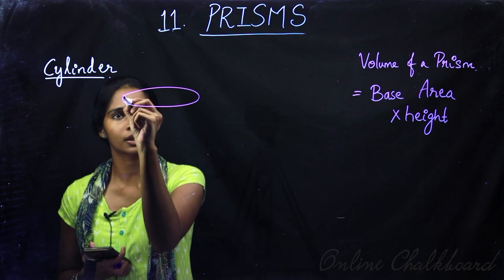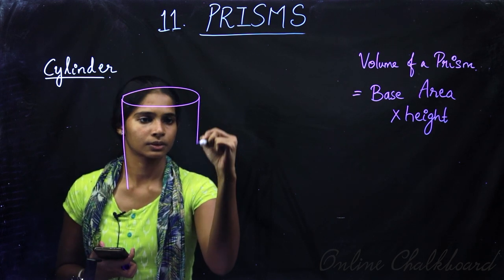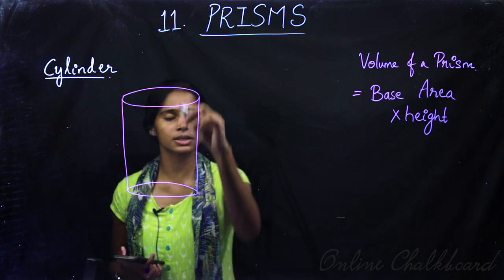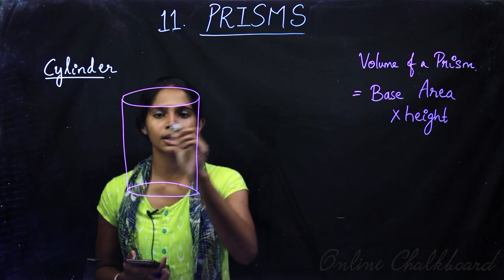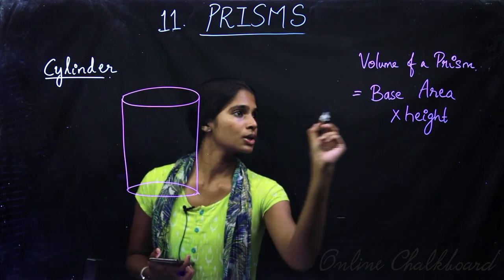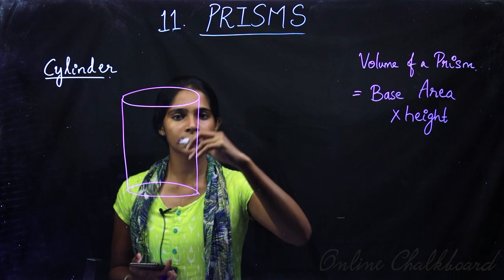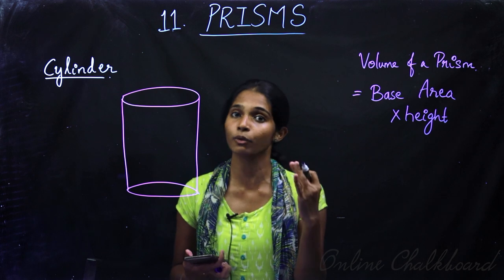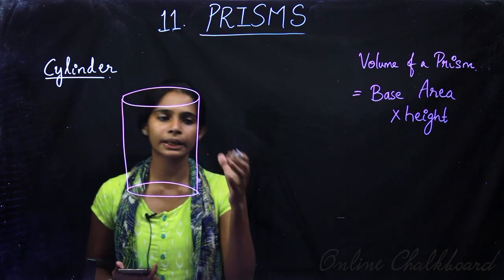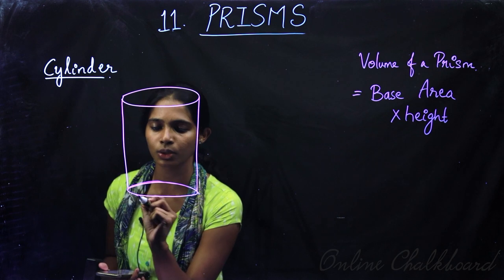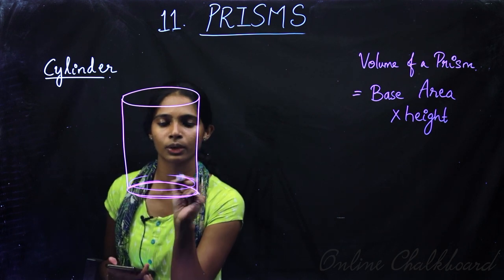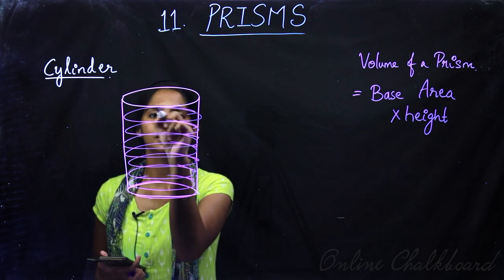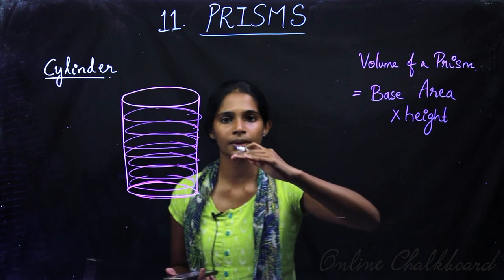Let's look at a cylinder. This is a cylinder with a circular base and a curved lateral surface. The volume of a cylinder represents its total capacity — the total space inside. We can imagine stacking circles on top of each other continuously until we fill out the full cylinder.